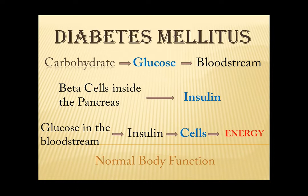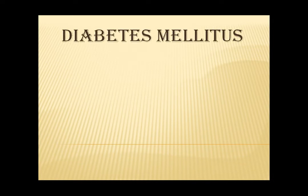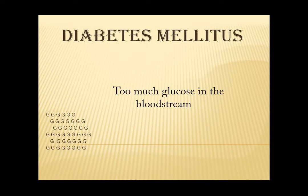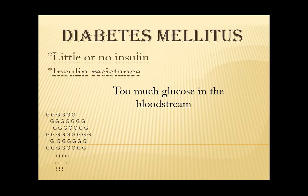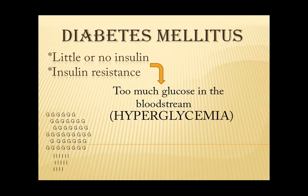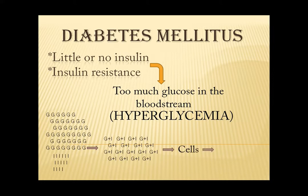So basically, what is happening to a patient with Diabetes mellitus is that there is too much glucose in the bloodstream because the pancreas produces little or no insulin at all, or there is what we call insulin resistance. Glucose is greater than the number of insulin. Therefore, not all the glucose will be able to enter the cell so that it can be used for energy. You will understand this better while discussing the different types of Diabetes mellitus.